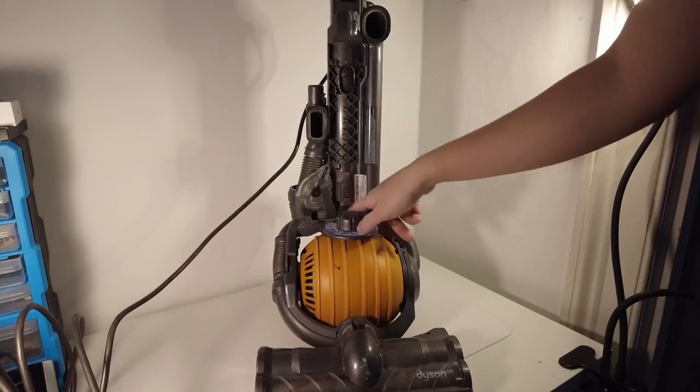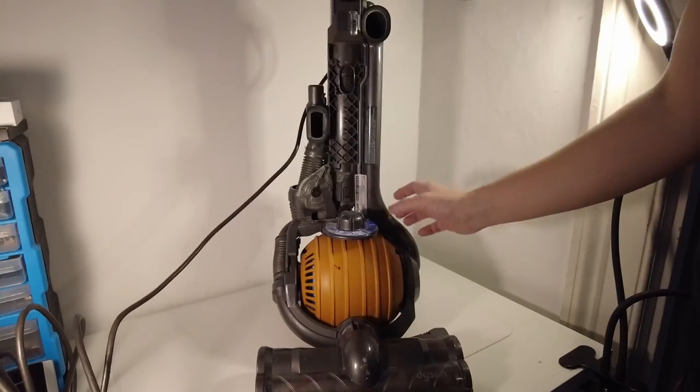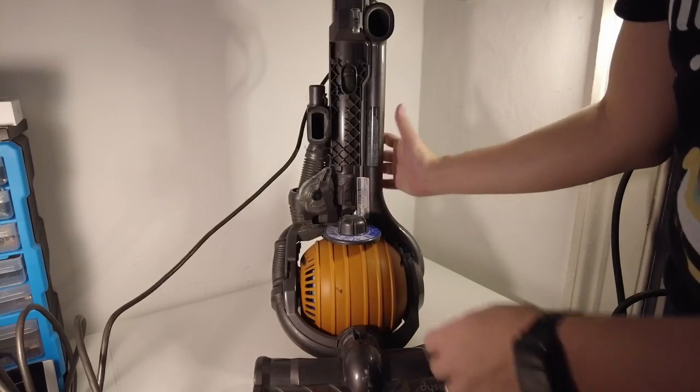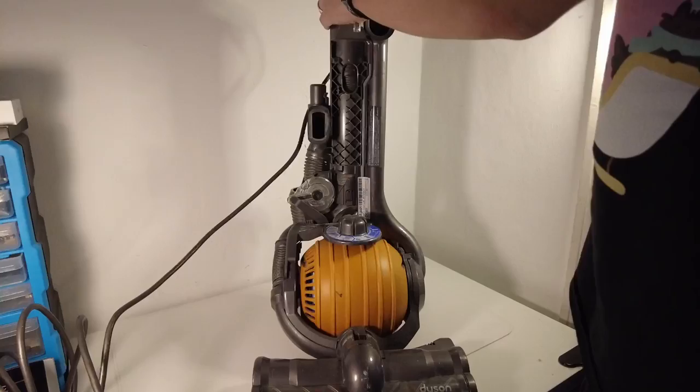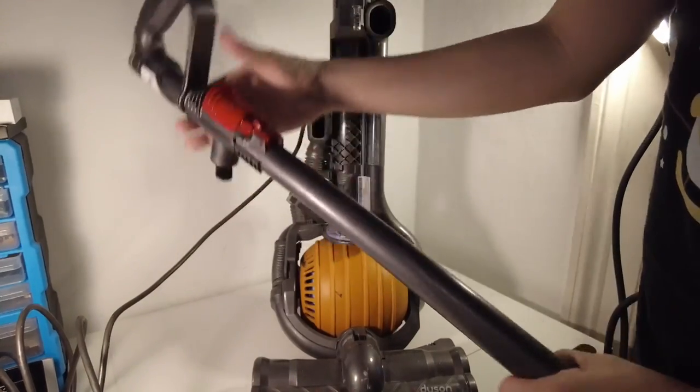So once we've exposed access to the hose section here there's this little tab here which I'm just going to press and that's basically going to loosen up the hose. So before we do that we'll take off the handle and just make sure that's completely out.